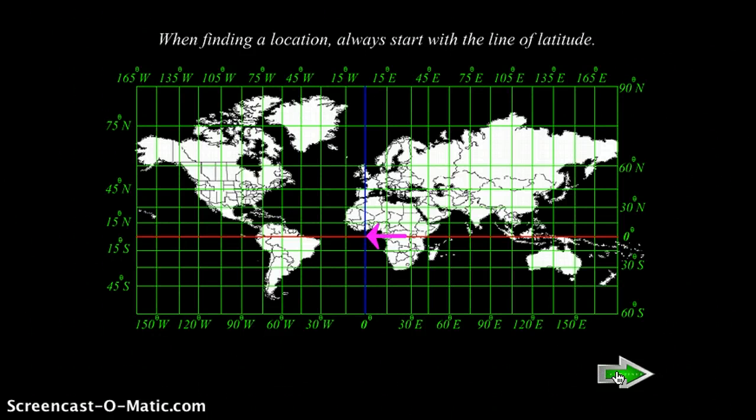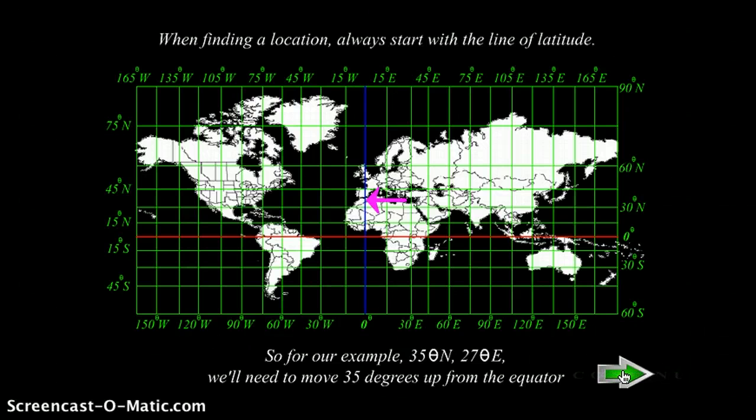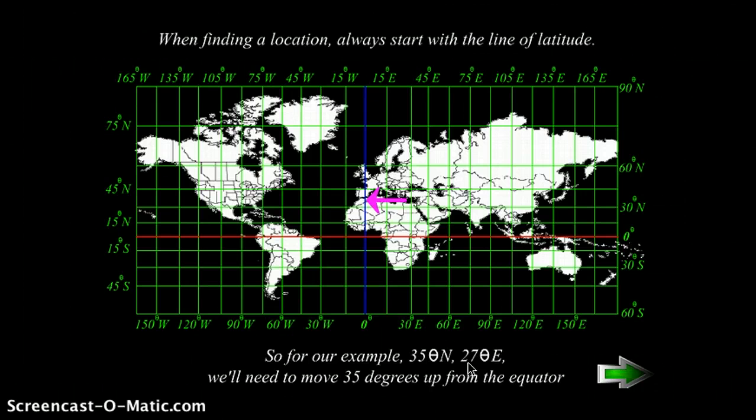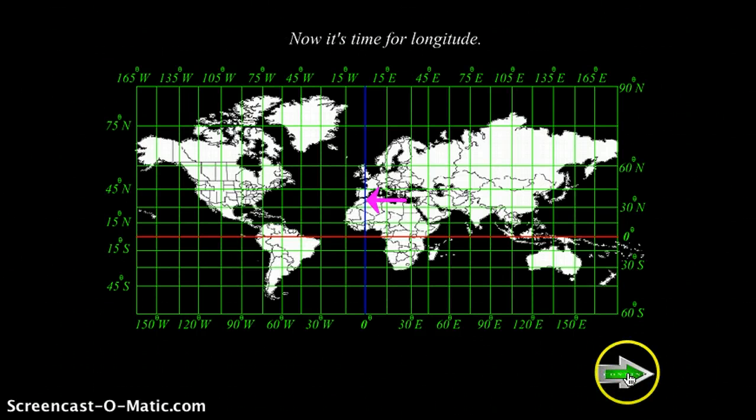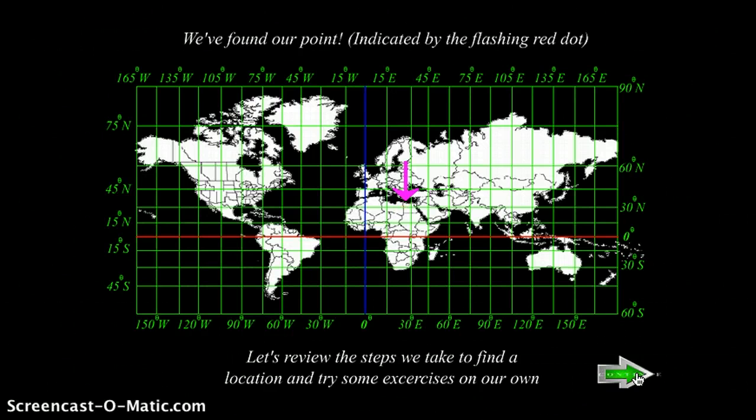When finding a location, always start with the line of latitude. It's the first line, just like the XY. First the X, then the Y. First you run, then you fly. So for our example, 35 degrees north and 27 degrees east, we need to move 35 degrees up from the equator. That's the latitude. And then we're going to move to the right, 27 degrees. Now we have 30, we don't have 27, so we have to get as close to 30 as we can. So we found our point, indicated by the flashing red dot.